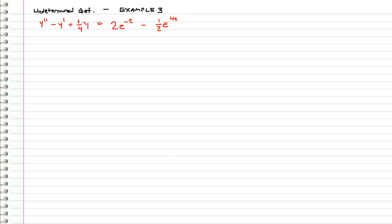Welcome back to another example for undetermined coefficients. This is the third common type of non-homogeneous equations that we will see that can be solved using undetermined coefficients. So first we had the polynomials, then we had the cosine, sine, trig functions, and now we have exponentials. These are the three main types, and the reason is that a list of all the terms and their derivatives can be represented with a nice finite particular form.